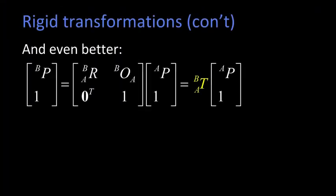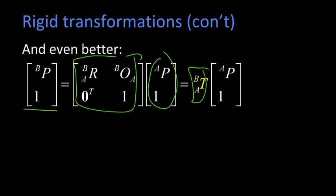So here, I've written what we had before. We have P in the A frame, expressed in homogeneous coordinates. Here is our 4 by 4 transformation matrix. Here is B expressed in the B frame. And I'm just going to write this as transformation from A to B.